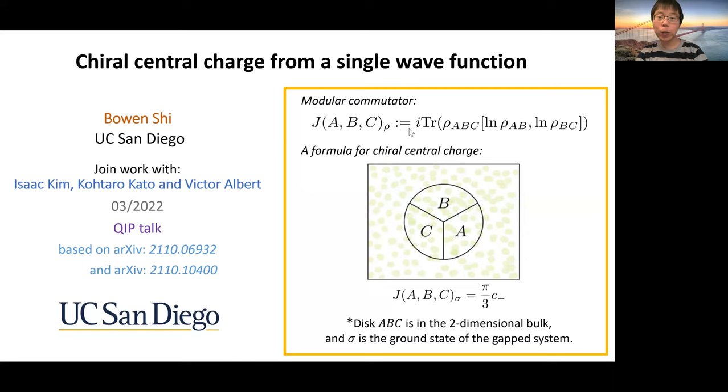In this talk, I'm going to tell you the pressing connection between quantum information theory and quantum many-body physics. By defining the modular commutator J(A,B,C) for any tripartite quantum system and making use of it, we proposed a solution to a long-standing puzzle of the gapped two-dimensional many-body system concerning the chiral central charge.